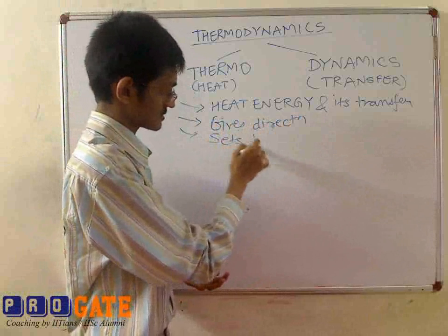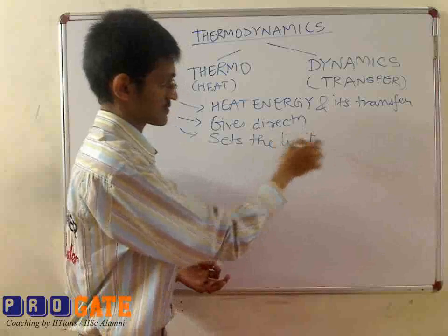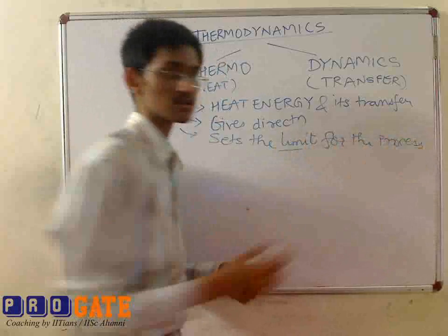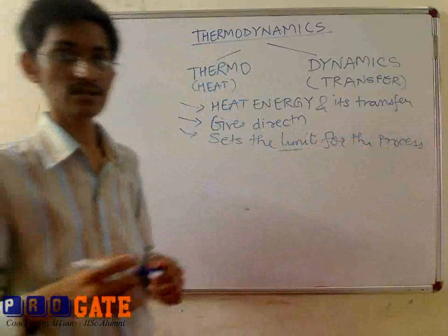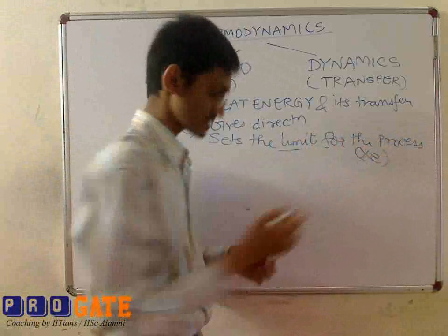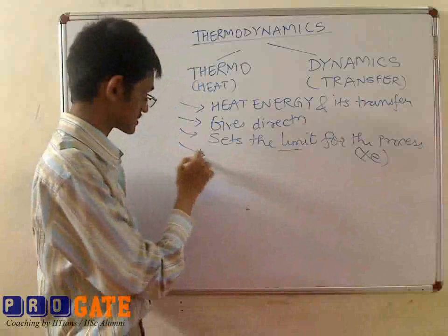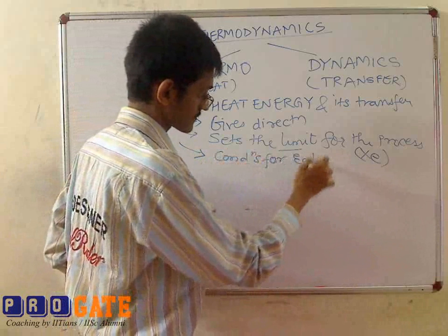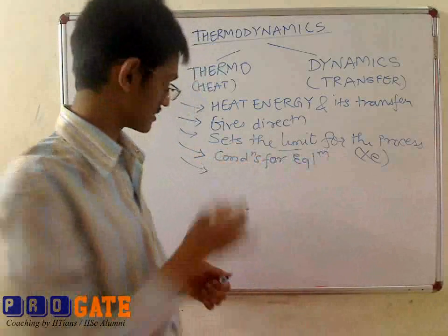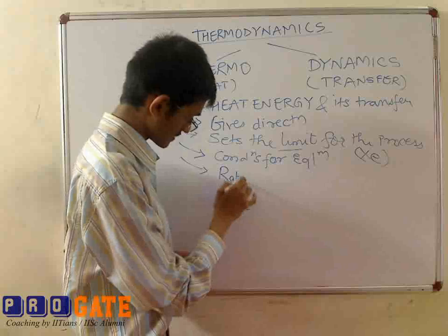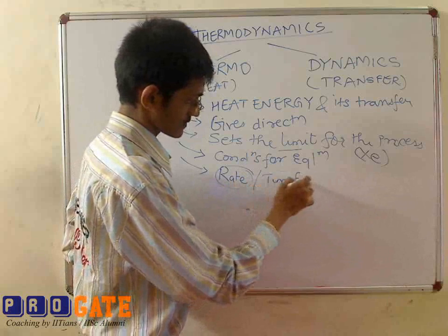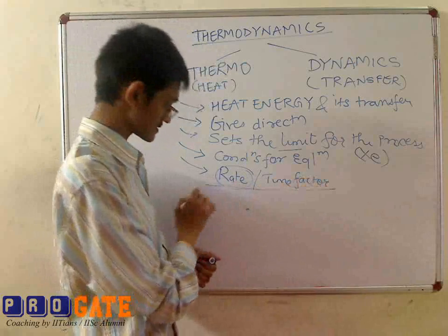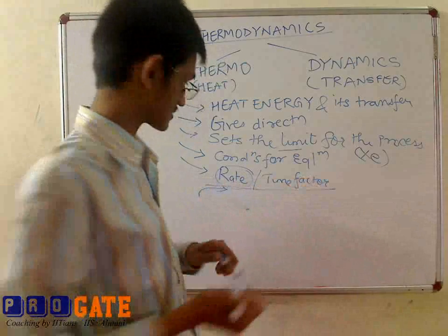It also sets the limit for the process. For example, for an irreversible reaction, what will be the maximum conversion that can be obtained from the reaction? It will be given by Xe, the equilibrium conversion. This is the equilibrium condition. It does not take into account the time factor. So how it differentiates itself from kinetics — kinetics takes into consideration the time factor, while thermodynamics is void of that.